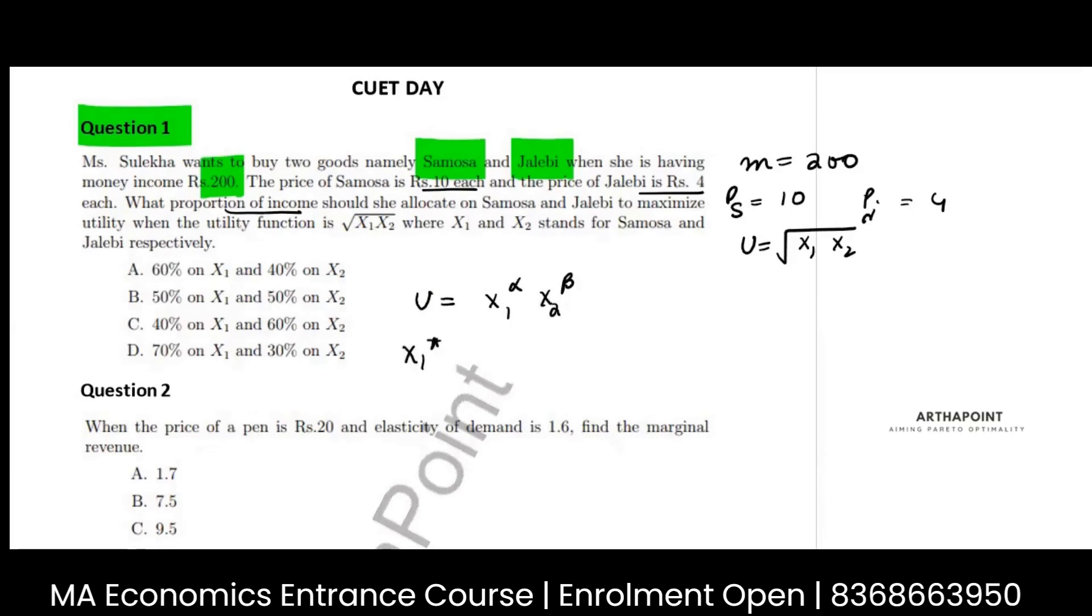We know that x1 star will be alpha upon alpha plus beta times m by px. This is the amount of x that you will buy. Expenditure on x will be how much? It will be price into quantity, so px into x. You will multiply this with px. So proportion of income will be what? Divide both sides by income.